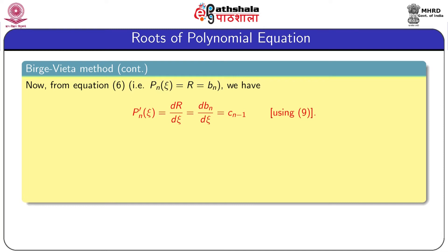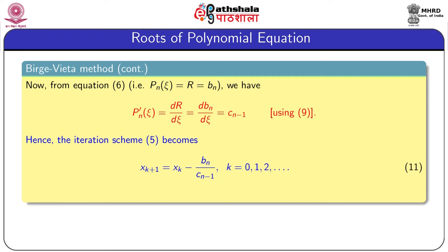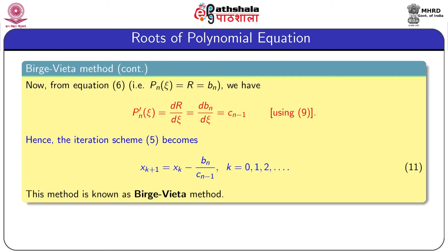To find P_n'(ψ), we differentiate and obtain d(b_n)/dψ = c_(n-1). Thus the Newton-Raphson iteration scheme becomes: x_(k+1) = x_k − b_n / c_(n-1), where b_n is the value of P_n at x_k and c_(n-1) is the value of P_n' at ψ, valid for k = 0, 1, 2, .... This method is known as the Birge-Vieta method to find a real root of a polynomial equation.